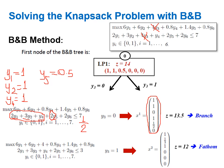The solution for node one — LP2 — is y1=1, y2=1, y3=0 (fixed), y4=1, y5=0.5, y6=0, with objective function value 13.5. Making the decision: can I fathom due to infeasibility? No. Due to solving? No — y5 is fractional. Due to bound? No, because the best solution is 12 and this upper bound is 13.5, so branching could yield a better solution. We must branch.